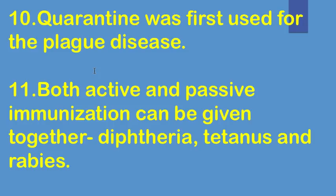Quarantine was first used for the plague disease. Both active and passive immunization can be given together in diphtheria, tetanus, and rabies.